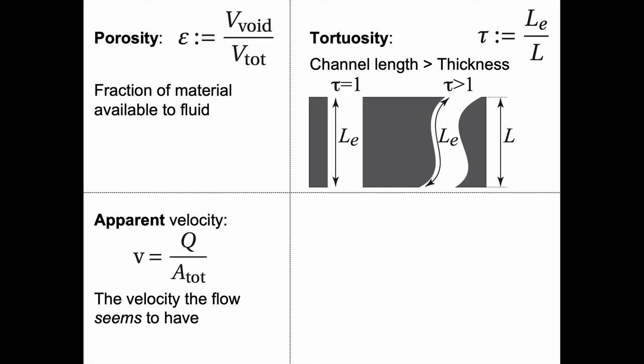We also need to define the tortuosity, because the channels are not necessarily straight; they might be a bit bent. Then their length will be longer than the thickness of the material. We define the tortuosity, τ, as the effective length of the channel divided by the thickness of the material.